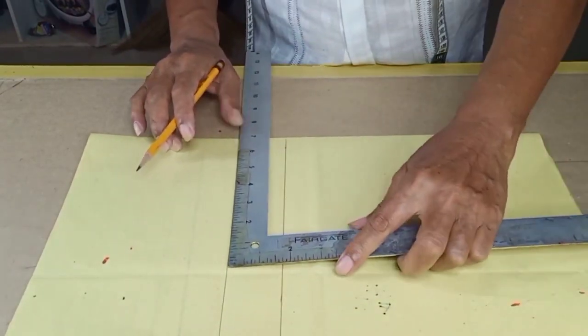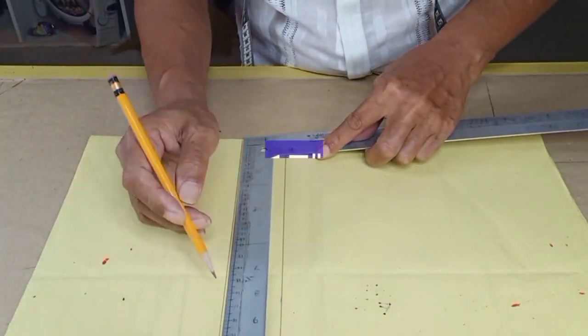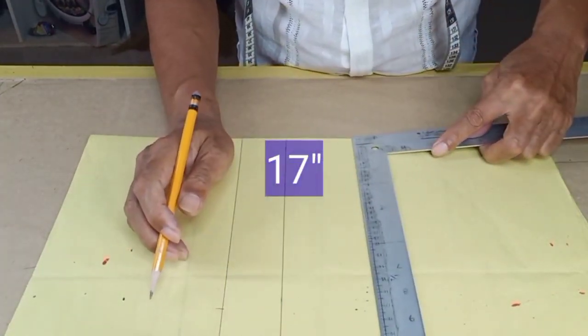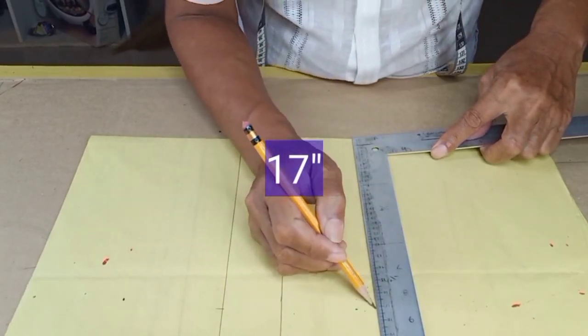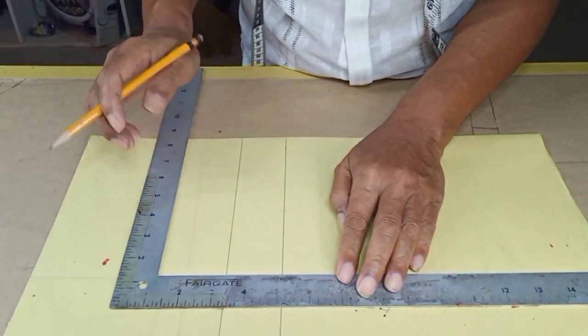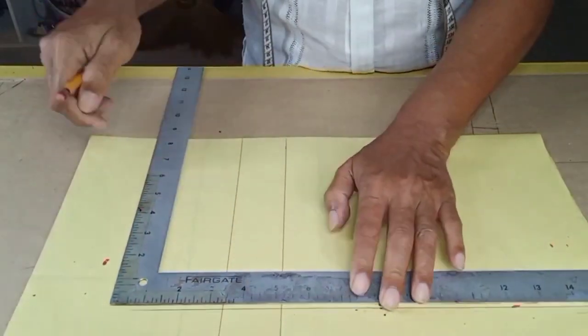From the edge, measure one half of the measurement of neckline, which is 17 inches. Also below. Then connect the marks. This is now the exact size of a collar.